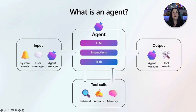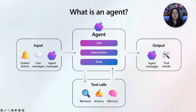The agent follows instructions that you define. These instructions are like the rules or the playbook for how you want your agent to behave and what you want it to do. Your agent can also call tools. Tools are what connect your LLM to the real world — whether that's retrieving data from documents that you upload, taking action in another app, or remembering past context. And that result is the output, which might be a message back to the user or an automated action being completed on your behalf.